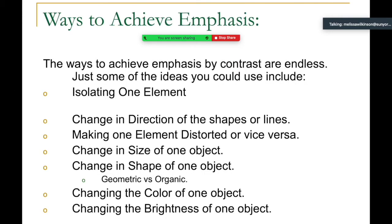You can achieve emphasis in a variety of ways: isolate the element, change the direction of shapes or lines, distort one element intentionally, change the size or shape of one object — just like the orange still life — or change the brightness of one object. When you have a lot of things together that are the same, you have to think about how much to turn up the difference of that one thing.